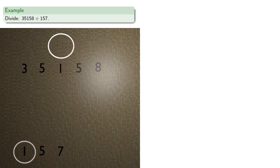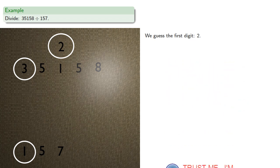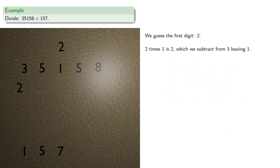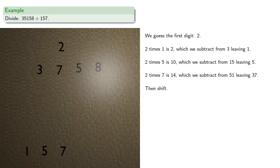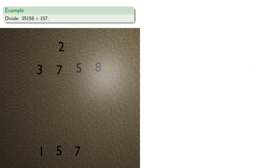Let's try a larger division. We'll place our numbers. Something times 1 has to be less than 3, so we guess the first digit is going to be 2. Upper commands the lower. 2 times 1 is 2, which we subtract from 3, leaving 1. 2 times 5 is 10, which we subtract from 15, leaving 5. 2 times 7 is 14, which we subtract from 51, leaving 37. Then shift. We guess the next digit — something times 1 is going to be less than 3, so we'll guess our next digit is 2.